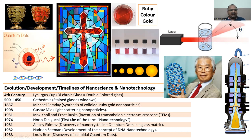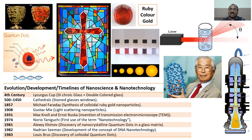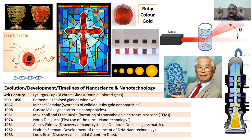Next is Ruska — he discovered the TEM, Transmission Electron Microscope. This TEM is not made up of nanoparticles, but it belongs to nanotechnology because we use TEM to find the size of nanoparticles. Nanoparticles cannot be seen with an ordinary microscope — you have to use SEM and TEM. By seeing this only you can find whether it is a nanoparticle or not. He invented the Transmission Electron Microscope.